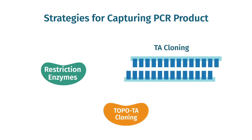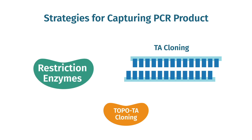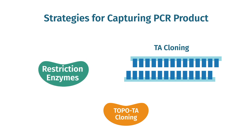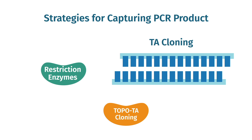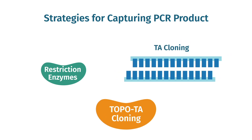Now let's discuss how we actually clone PCR products. There are three common strategies for capturing a PCR product into a vector: restriction enzyme cloning, TA cloning, and topo cloning.